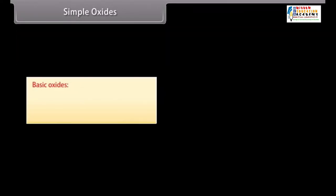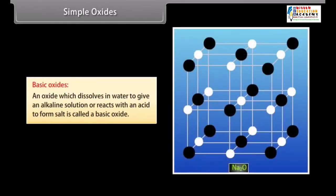Basic oxides. An oxide which dissolves in water to give an alkaline solution or reacts with an acid to form salt is called a basic oxide. For example, Na2O, K2O, MgO and CaO.